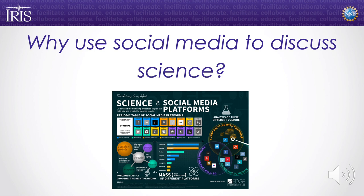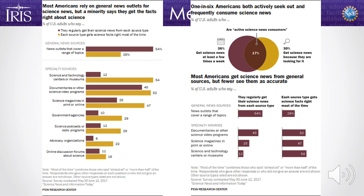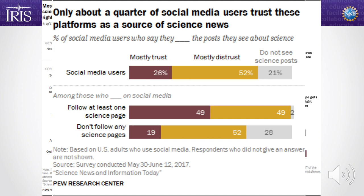Why should we use social media to discuss science? 60% of American adults get their news from social media. A lot of people are getting news from multiple social media sites, but half of Facebook news users get news only from Facebook — so we can't discount it as an invalid tool for science communication. Most Americans are relying on general news outlets for science news, but they really don't think those outlets are getting the facts right about science. One in six Americans actively seek out science news, but only about a quarter of social media users trust those platforms as a source of science news. So people are looking for science information, but they don't trust the media and they don't trust social media.